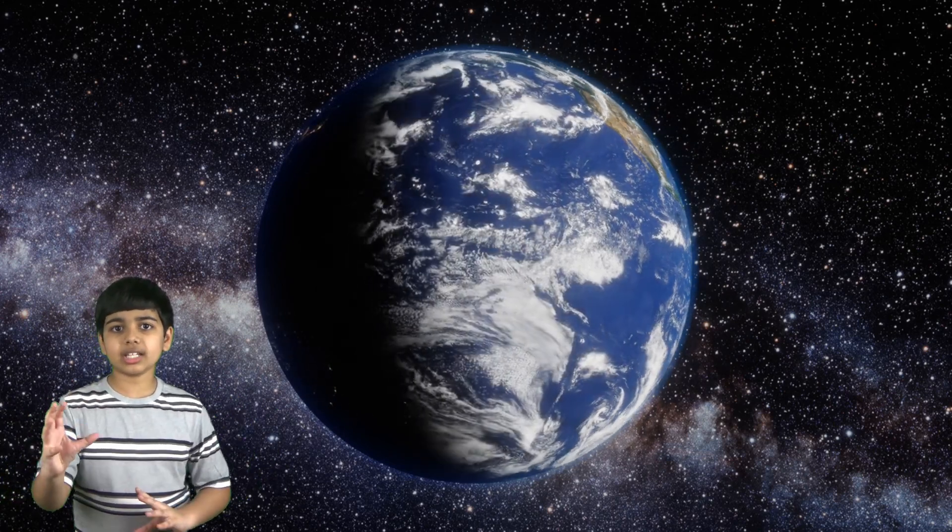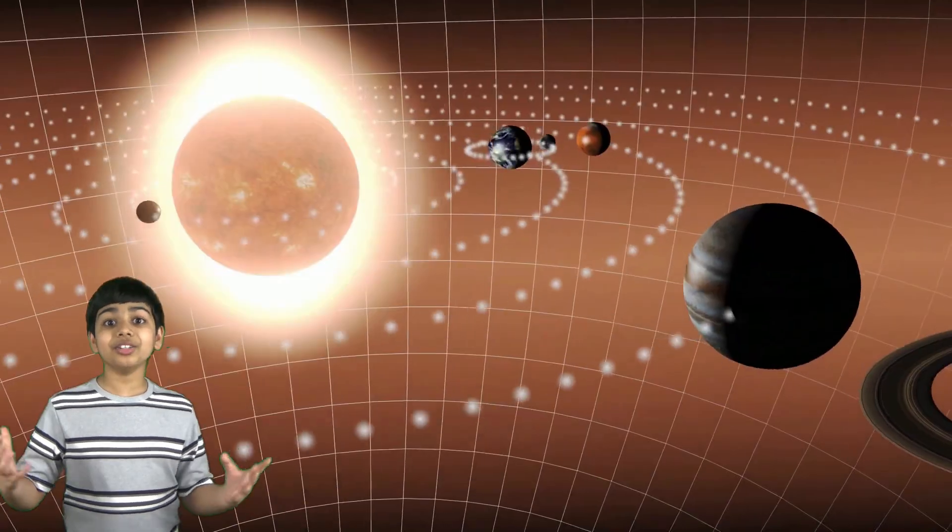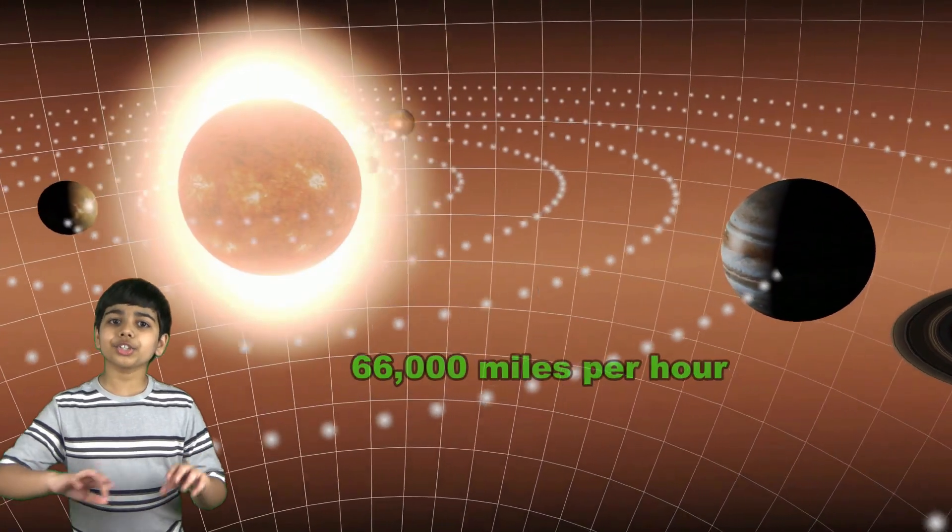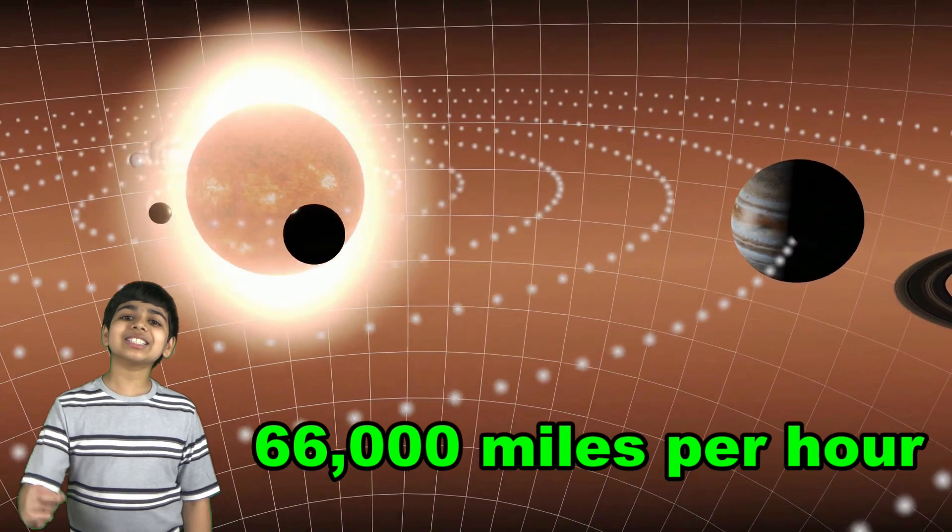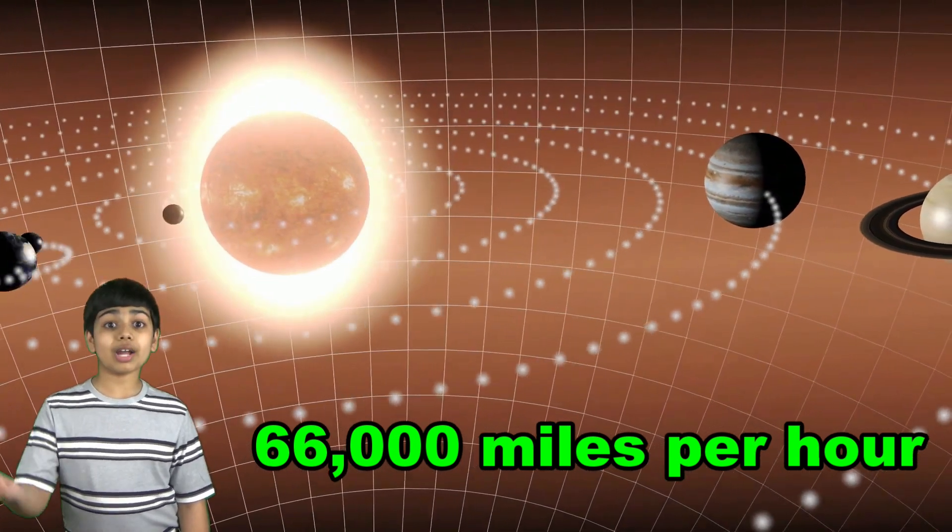Now, apart from rotating on its own axis, Earth revolves around the sun once every year with an approximate speed of 66,000 miles an hour, and we all travel with Earth.